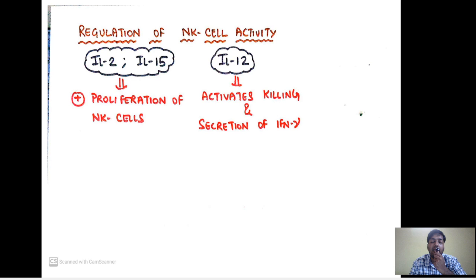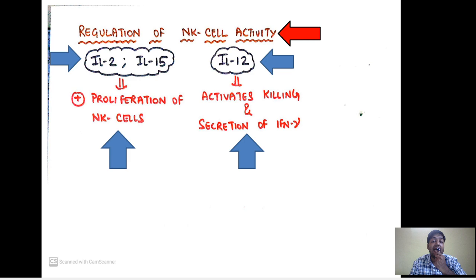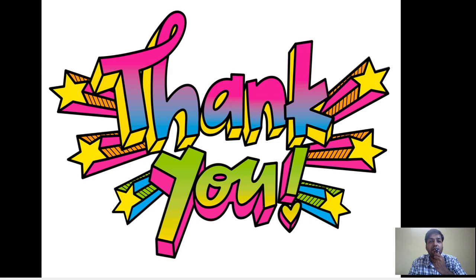Regulation of NK cell activity: interleukins 2 and 15 stimulate the proliferation of NK cells, whereas interleukin 12 activates the killing activity of NK cells and activates secretion of interferon gamma. Thank you very much for watching. Please subscribe to the channel and share with those in need. Stay tuned for more lectures on immunity.